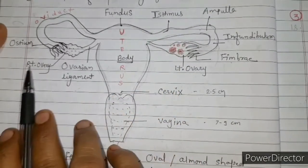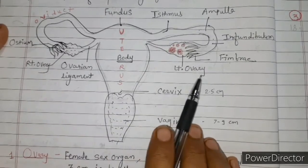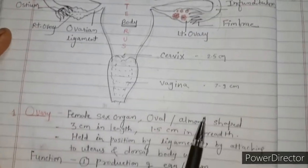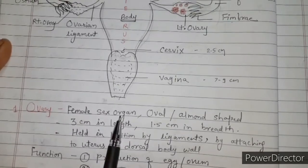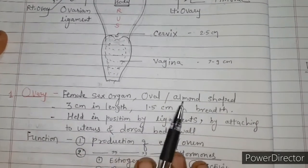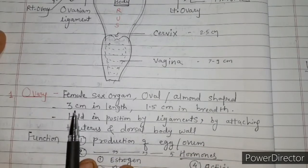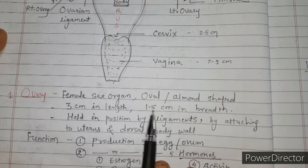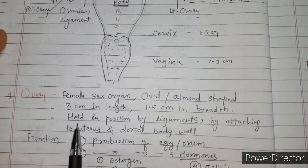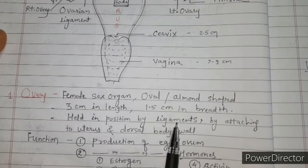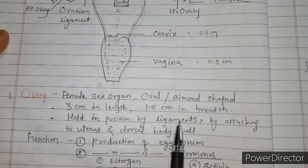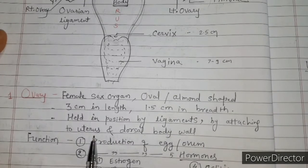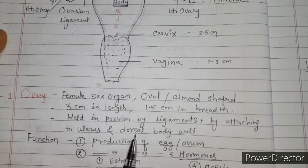This is the right ovary and this is the left ovary. The ovary is the primary female sex organ, oval or almond in shape. The length of the ovary is 3 centimetres and its breadth is 1.5 centimetres. The ovaries are held in position by ligaments, which are special connective tissues, attaching the ovaries to the uterus as well as to the dorsal body wall.